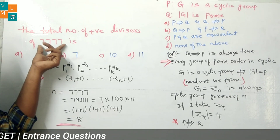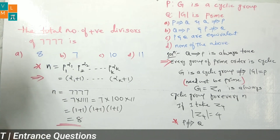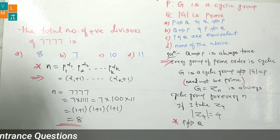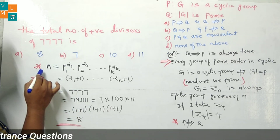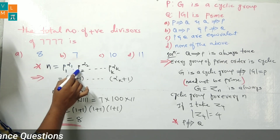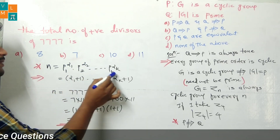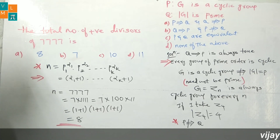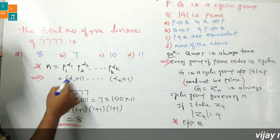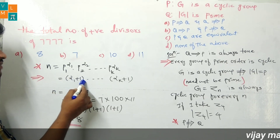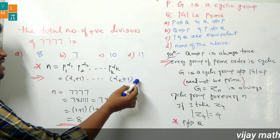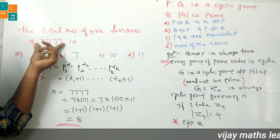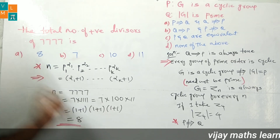For the second question, we need to find the number of divisors. First find the prime factorization of the number. If n = p₁^α₁ · p₂^α₂ · … · pₖ^αₖ, where p₁, p₂, …, pₖ are prime numbers, then the number of divisors of n is (α₁ + 1)(α₂ + 1)…(αₖ + 1).